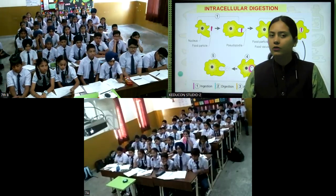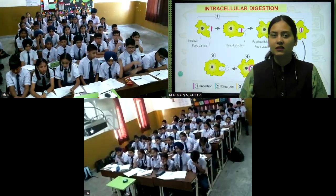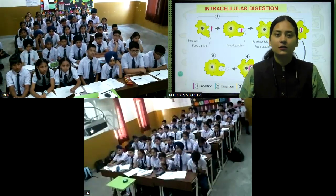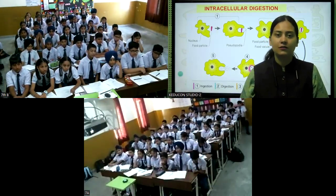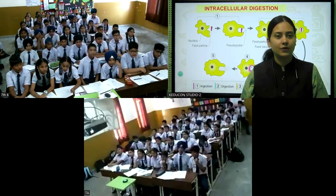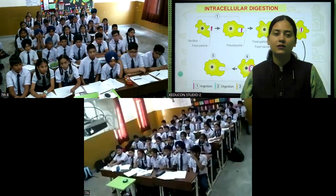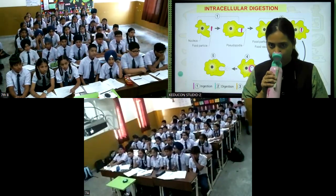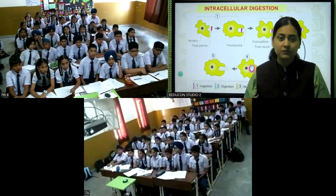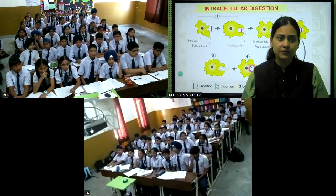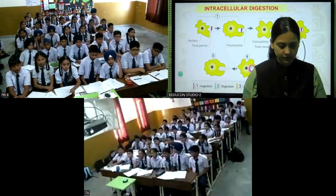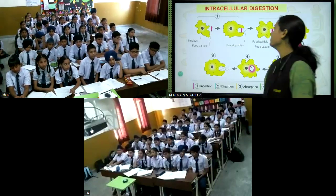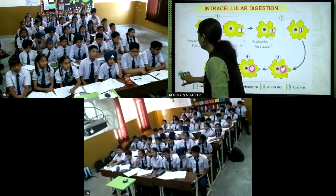Some organisms are made up of only one cell — those are called unicellular. You already learned about amoeba in your class. Amoeba is unicellular, meaning it is made up of just one cell.